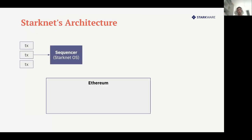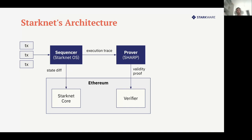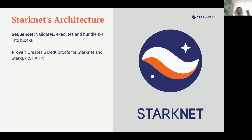Briefly about StarkNet's architecture: we have a sequencer responsible for producing blocks, which is not yet decentralized. We have a prover component that generates the proof sent to Ethereum. On Ethereum there is a verifier — a smart contract that verifies the proofs sent from StarkNet — and a StarkNet core contract that handles other functionalities like messaging. We also have full nodes syncing between L1 and L2, which you can query for all relevant data.